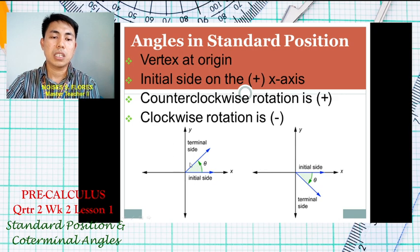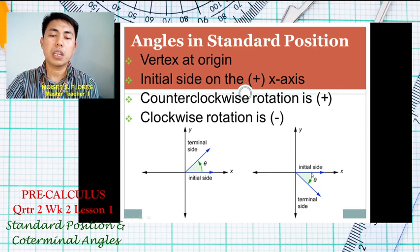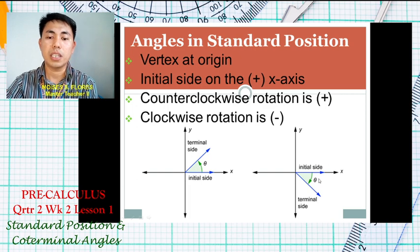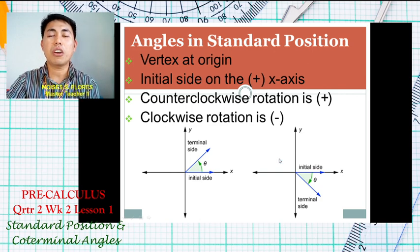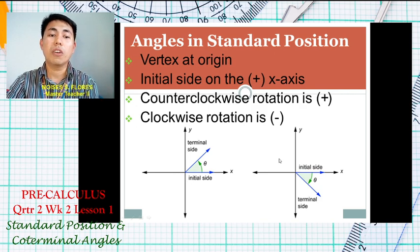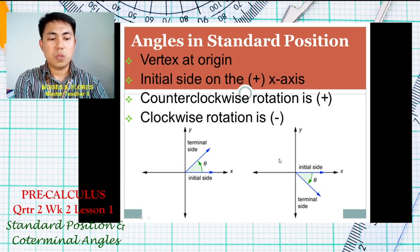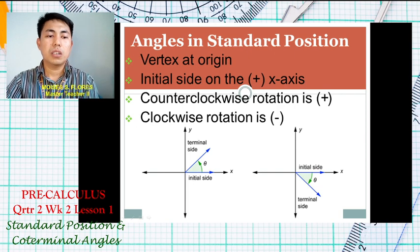A counterclockwise direction gives a positive angle measurement. On the other hand, in the second example, the direction is clockwise, and the angle measurement is therefore negative. Remember: in standard position, the vertex is at the origin, the initial side is on the positive x-axis, counterclockwise is positive, and clockwise is negative.